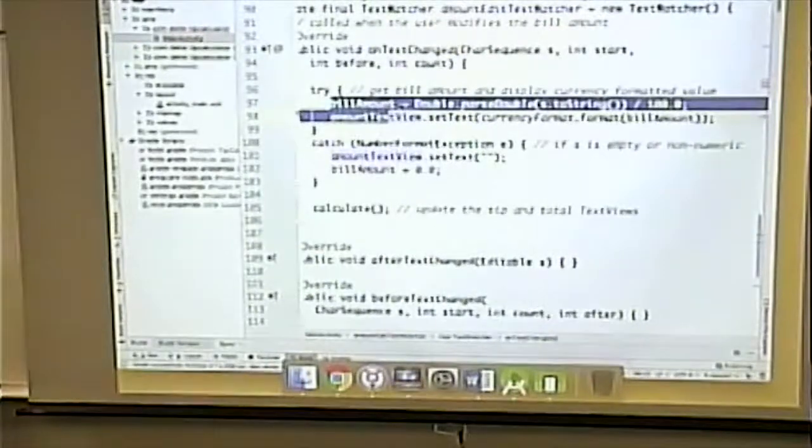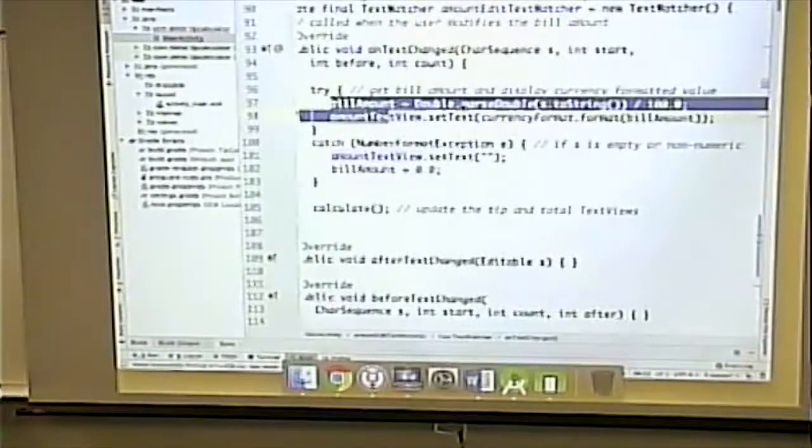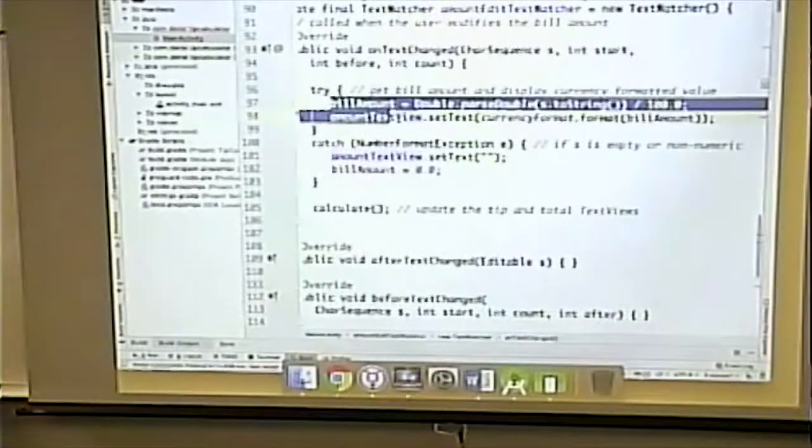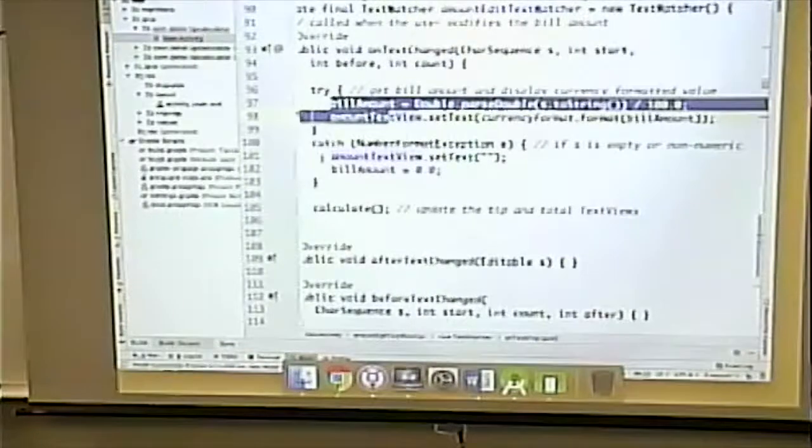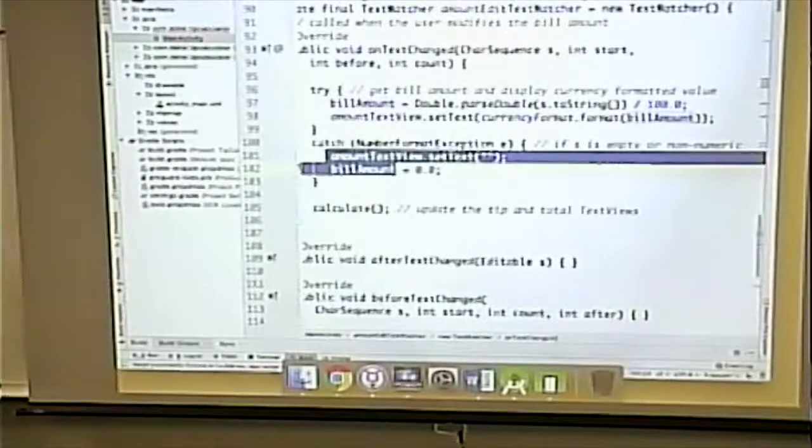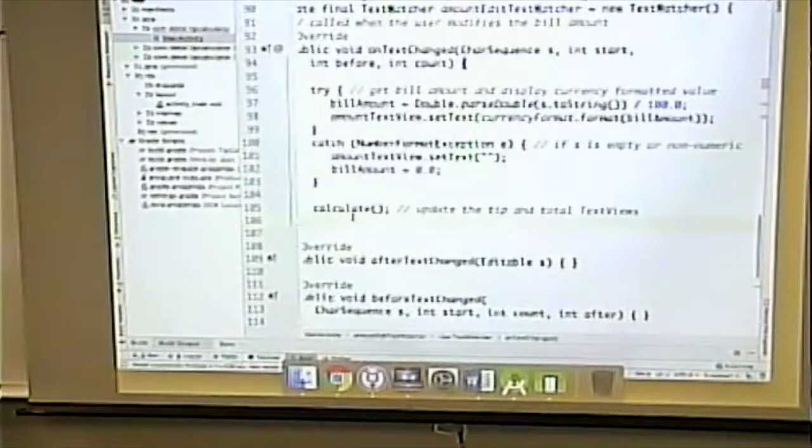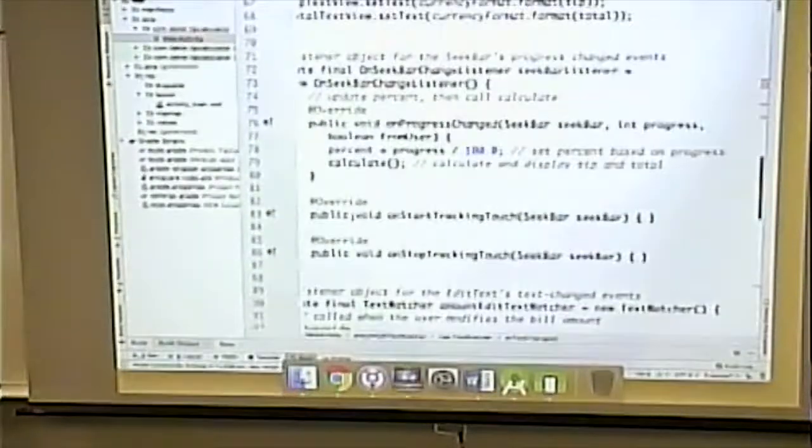So we've set the bill amount, which was what? An instance variable. We set that second text view that's on top of our first text view. There should never be an exception, but if there is one, this is what we do. And then finally we call calculate again. What's calculate do?